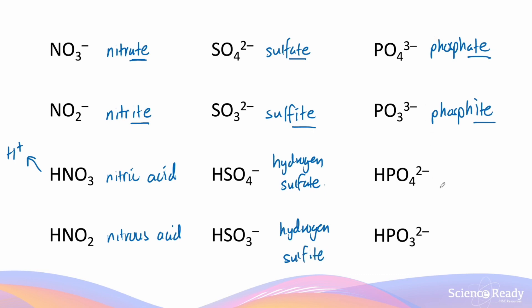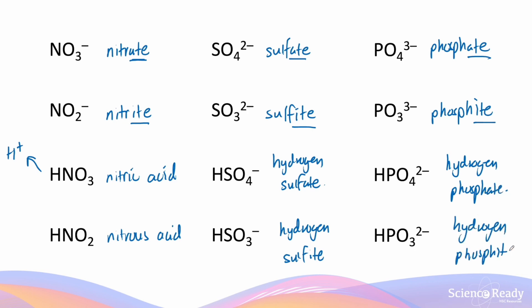For phosphate and phosphite, the same applies — we reduce the negative charge from three minus to two minus by adding a hydrogen ion, giving hydrogen phosphate and hydrogen phosphite. In all these examples, when we add a hydrogen ion, notice that the number of nitrogen, sulfur, phosphorus, or oxygen atoms remains the same. It's only the overall charge of the molecule that changes.